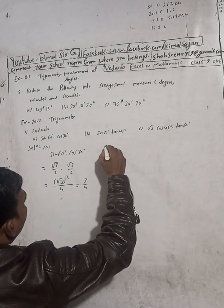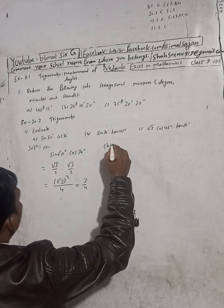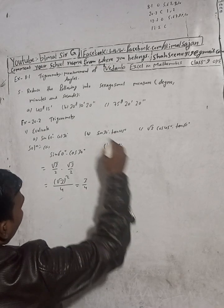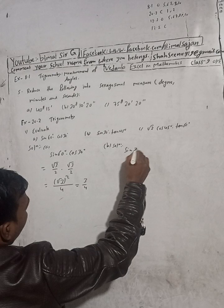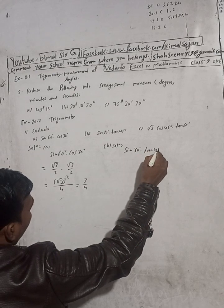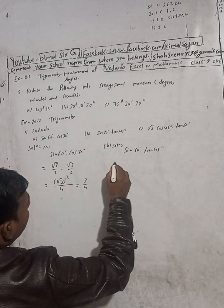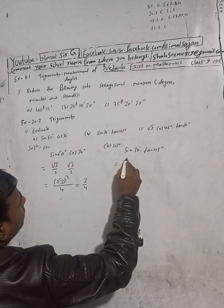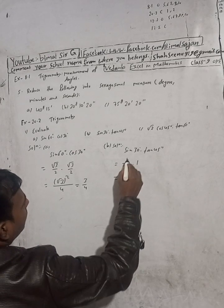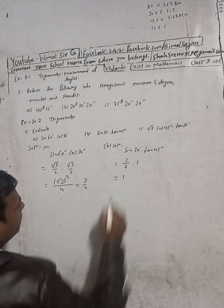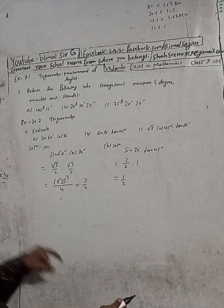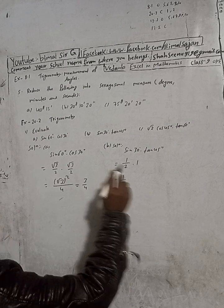This is part B solution. sin 30 degree into tan 45 degree is equal to — sin 30 degree value is 1 by 2, into tan 45 is equal to 1, so 1 by 2 into 1 equals 1 by 2.